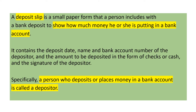Aside from the school forms, we will also be tackling the deposit slip and the withdrawal slip. What is a deposit slip? A deposit slip is a small paper form that a person includes with a bank deposit to show how much money he or she is putting in a bank account. It contains the deposit date, the name, and bank account number of the depositor, the amount to be deposited in the form of checks or cash, and the signature of the depositor. A person who deposits or places money in a bank account is called a depositor.